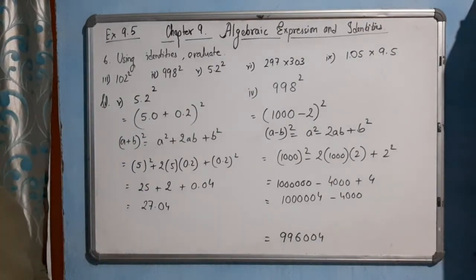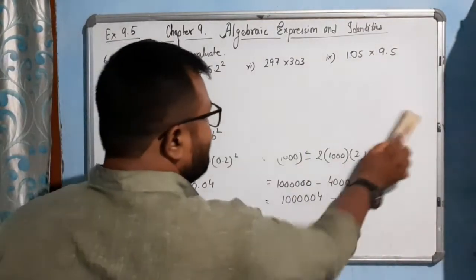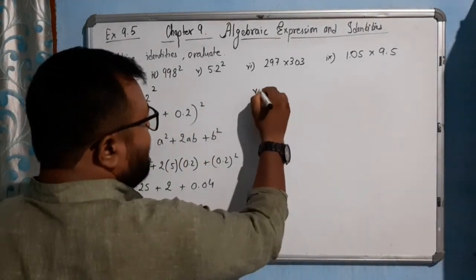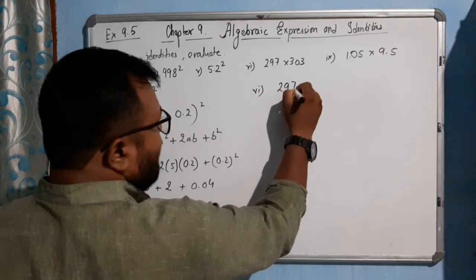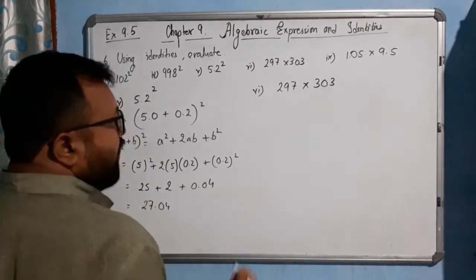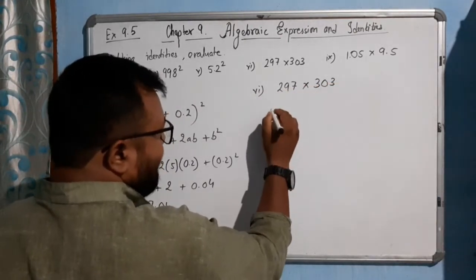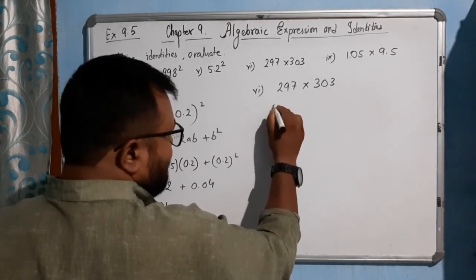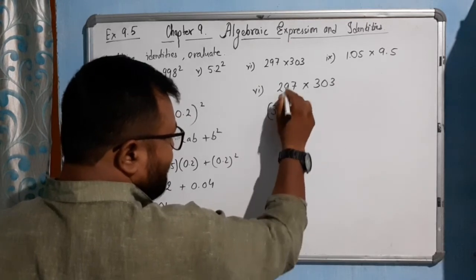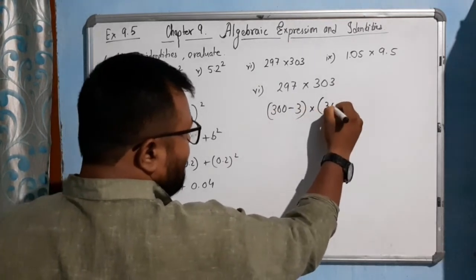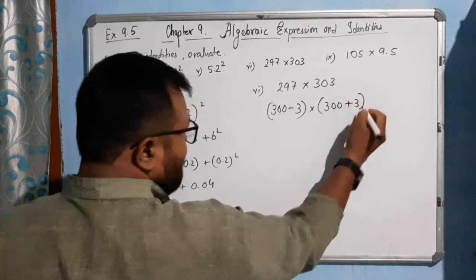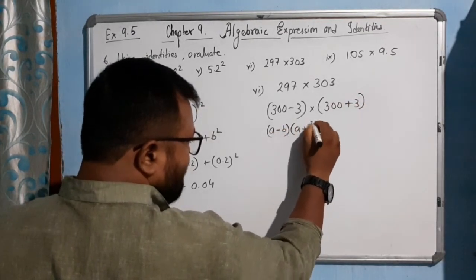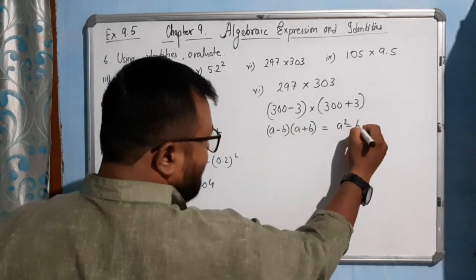Now we will solve this option, 297 into 303. It will look like 300 minus 3 into 300 plus 3. So we are using this identity: a minus b into a plus b equals a square minus b square.